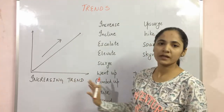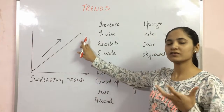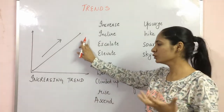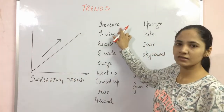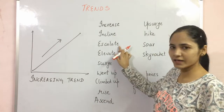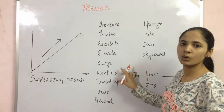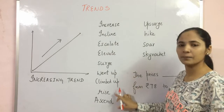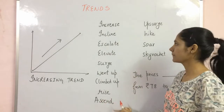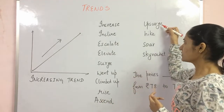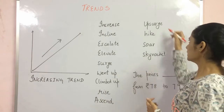For an increasing trend, when values increase, we can use the following synonyms: increase, incline, escalate, elevate, surge, went up, climbed up, rise, and ascend. Additionally, for a rapid increase, we use words like upsurge, hike, soar, and skyrocketed.